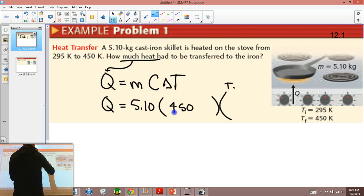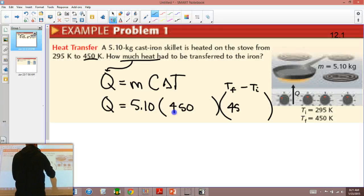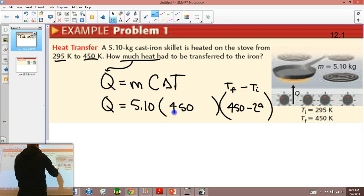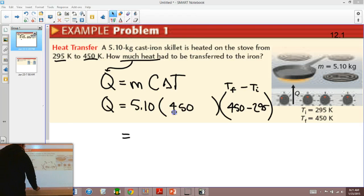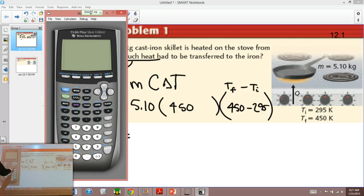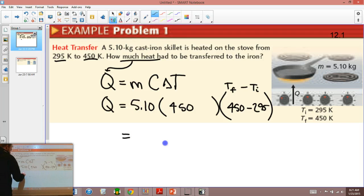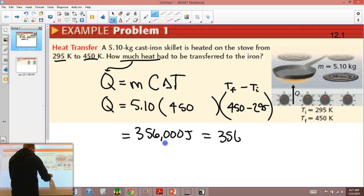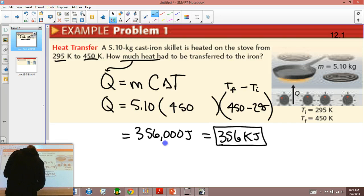So, 450. The change in temperature. Remember, it's the final temperature minus your initial temperature. The final temperature, 450. The initial temperature, 295. So, this is a very straightforward question. It's just going to require your calculator to plug in a few numbers here. So, 5.1 times 450 times 450 minus 295. It comes out to 356,000 joules. Which we will, it's easier to write 356 kilojoules.